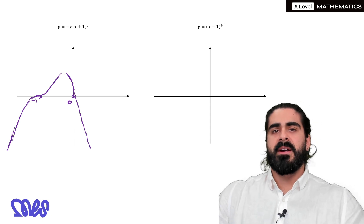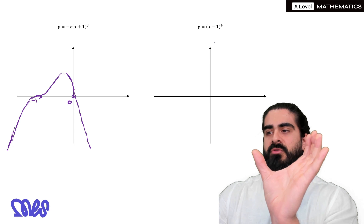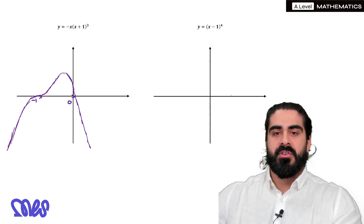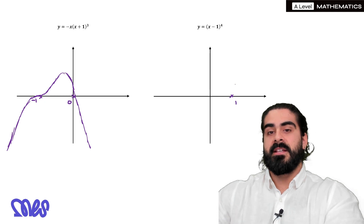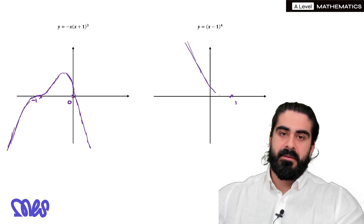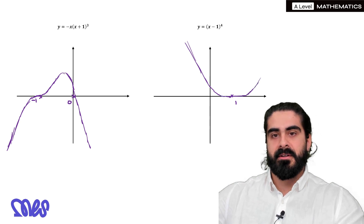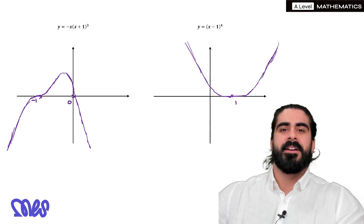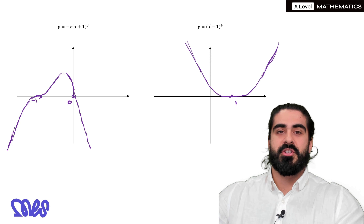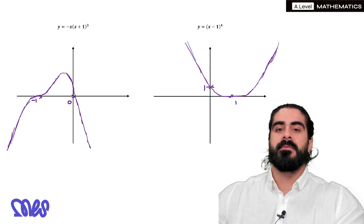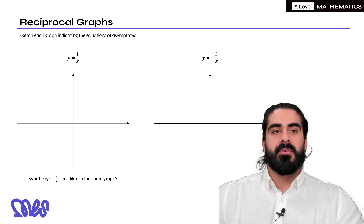Last one: x minus 1 to the power of 4. This is the original quartic graph shifted to the right by 1, so it crosses at 1. It's going to come down and go a bit more flat at 1 and then come back up again, so it looks like a quadratic. Where does it cross the y-axis? Make x equals 0: you have minus 1 to the power of 4, which is just 1.